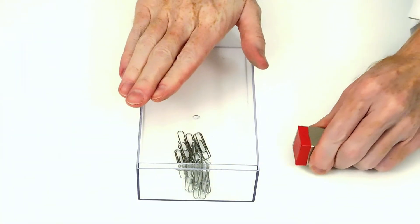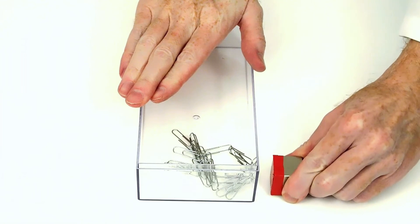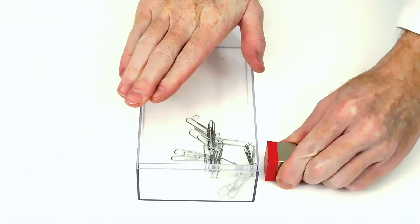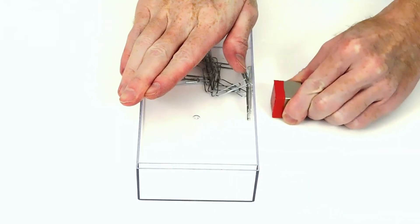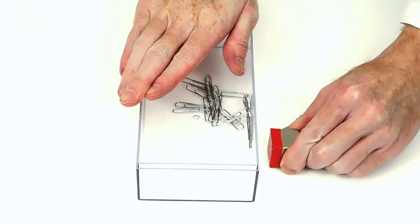Magnets can move objects without touching or contacting them, so we call the magnetic force a non-contact force. The strength of a magnetic force depends on two things: how powerful the magnet is and the distance from the magnet.